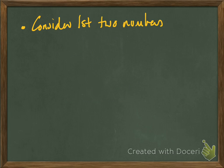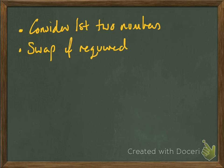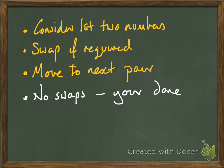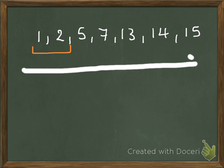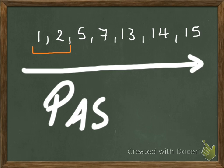First, you're going to consider the first two numbers. Swap if required, then move on to the next pair. When you've got no swaps, you are done. You're going to be given a list and the first pair is the first and second number, the second pair is here, third pair, fourth pair, fifth, sixth. The pass is starting from whichever number you start with and working your way through all the numbers. Once you've gone from the first to the last, that's considered a pass.